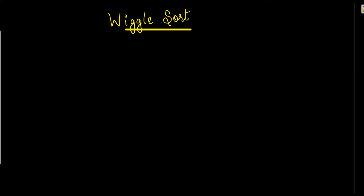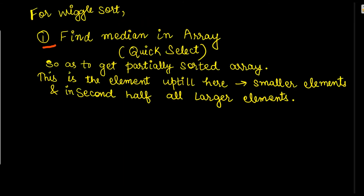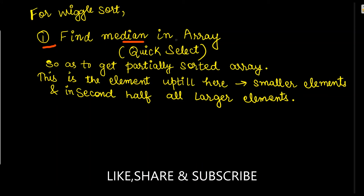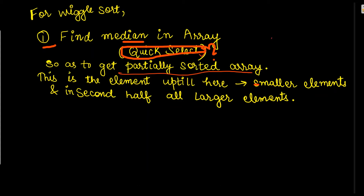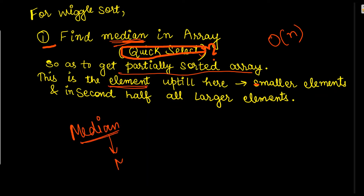Here comes wiggle sort, where we first find the median of the array using quick select. With quick select we get a partially sorted array in O(n) time, instead of O(n log n) for a full sort. The reason we need the median is that all elements before the median will be smaller than it, and all elements in the second half will be larger.